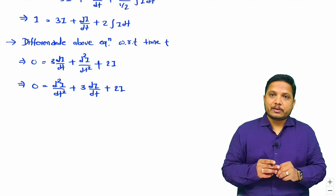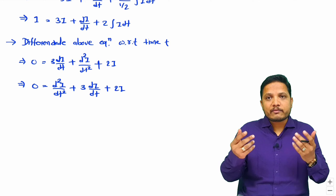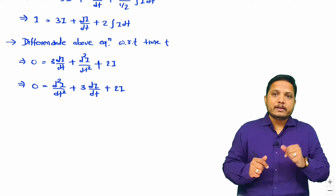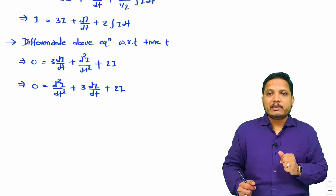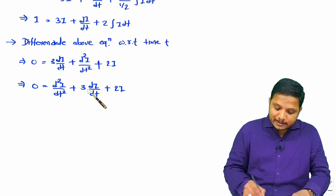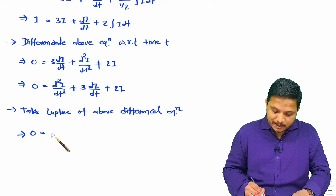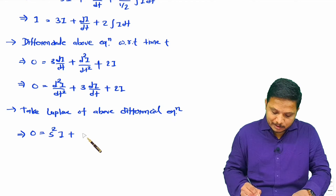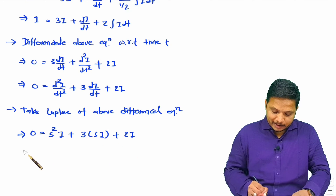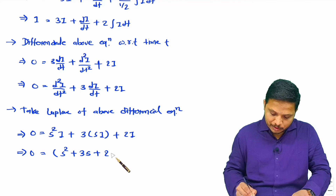Now we have the differential equation. Since it has power 2, the normal differential equation solution method used in previous examples cannot be applied. Instead, we take the Laplace transform. Applying Laplace to this differential equation: double differentiation becomes s²·I, single differentiation becomes s·I, giving us (s² + 3s + 2)·I = 0.